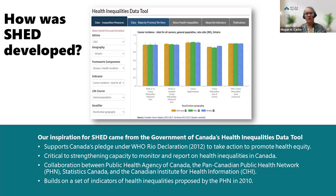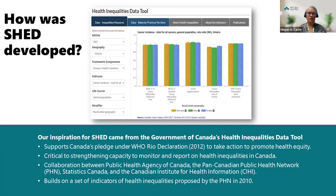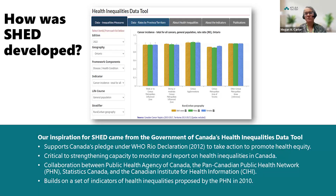Originally, the Health Inequalities Data Tool was built to support Canada's pledge under the World Health Organization Rio Declaration to take action to promote health equity. It is a critical tool for strengthening the capacity to monitor and report on health inequalities, and is a collaboration between the Public Health Agency of Canada, the Pan-Canadian Public Health Network, Statistics Canada, and the Canadian Institute for Health Information. We referred to any and all guidance documents and technical documentation from this tool to guide us in SHED.